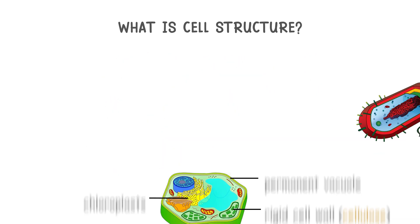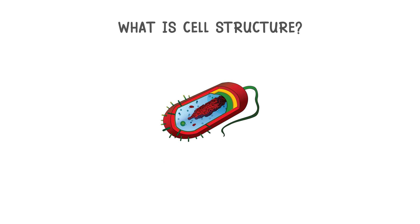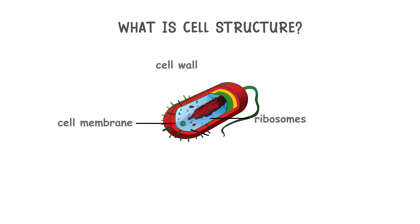Now let's venture into the world of bacterial cells. These are prokaryotes and they are unicellular, meaning they consist of a single cell. They do have some common features with eukaryotic cells, such as a cell membrane, cell wall, ribosomes, and cytoplasm.